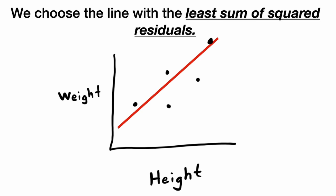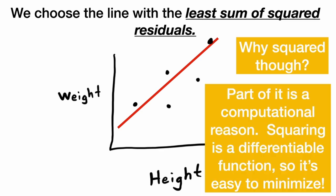And out of all of these lines, the red line had the smallest sum of squared residuals. Why squared, though? Why do we square the residuals?